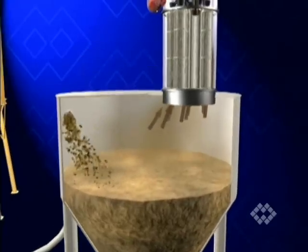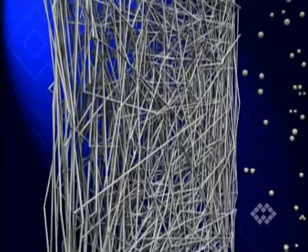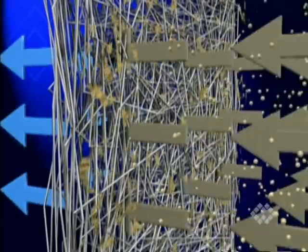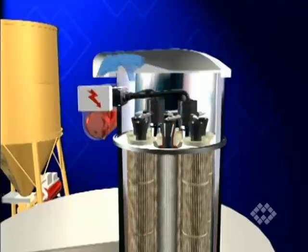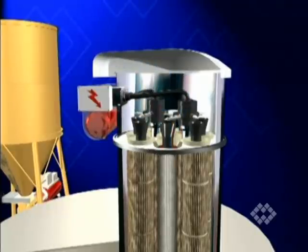The contaminated air is blown into the filter body. While the dust settles on the outside of the cartridges, the air penetrates the filtering media and escapes through the clean air outlet at the top of the unit.